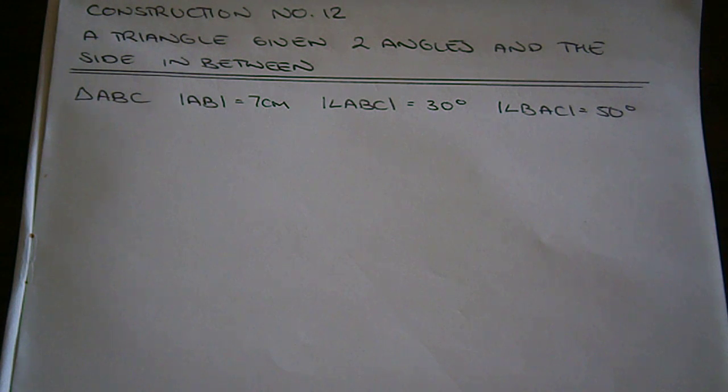So we'll wish to draw our triangle ABC where the length A to B is 7 centimeters, the angle ABC is 30 degrees and the angle BAC is 50 degrees.